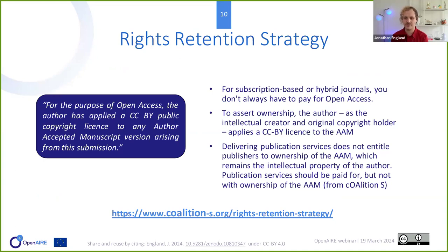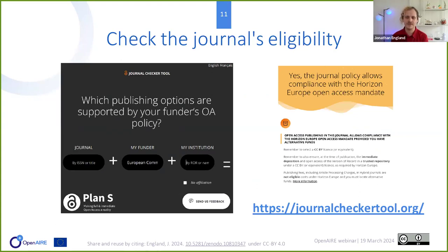For subscription-based or hybrid journals, you don't always have to pay for open access. Coalition S and Plan S have issued a rights retention strategy: a statement you include when submitting your article to the publisher, asserting ownership of at least the author accepted manuscript. If you retain authorship on that version, you will be able to upload it to a repository and be compliant. You can check journal eligibility using the Journal Checker Tool from the European Commission.